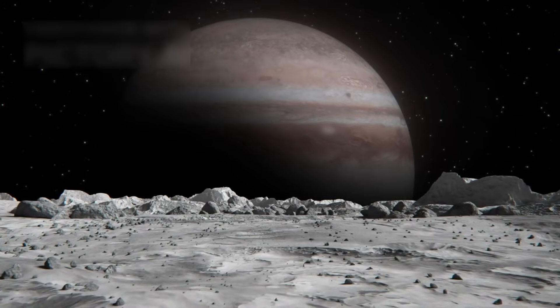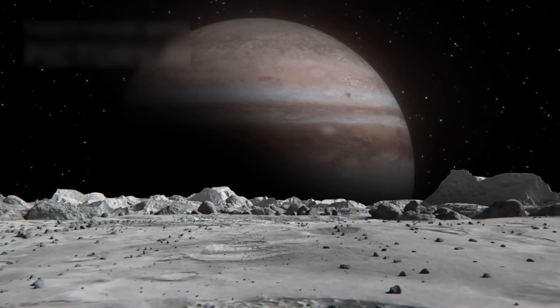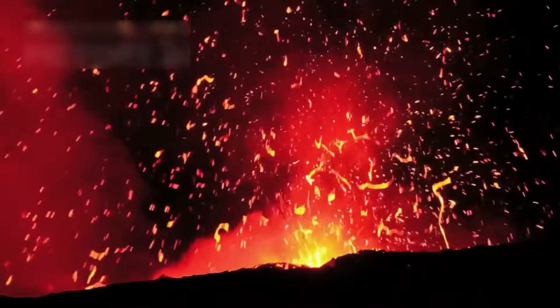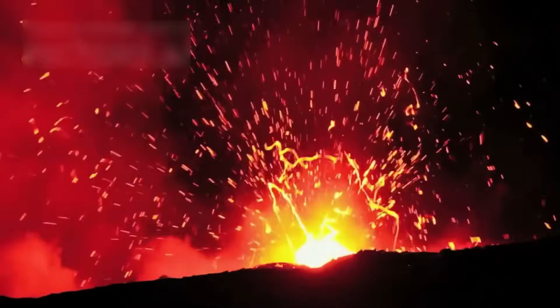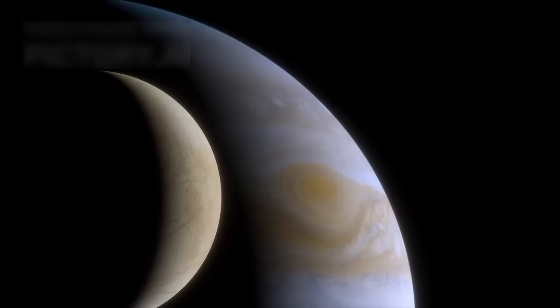Scientists now see outer moons like Io and Europa not as barren rocks, but as active worlds. Io turned out to be the most volcanically active body in the solar system. Europa, under its icy shell, may hide an ocean capable of harboring life.